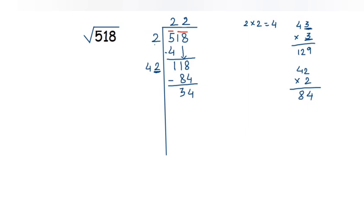We get a remainder of 34, which confirms this number is a non-perfect square. Now, just as in normal division, we place a decimal point and bring down two zeros. We take the two zeros together — not a single zero — because digits must be taken in pairs. Our new dividend becomes 3400 and we continue the same procedure.